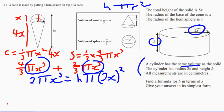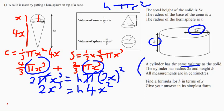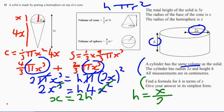Let's make life easier and divide both sides by pi. We've got 2x cubed equals 4x squared times h. I can take x squared out from both sides, and also divide by 2 on both sides. That gives me x equals 2h. The question says find a formula for h in terms of x, so I just divide both sides by 2, giving h equals x over 2.